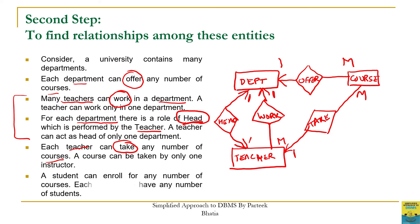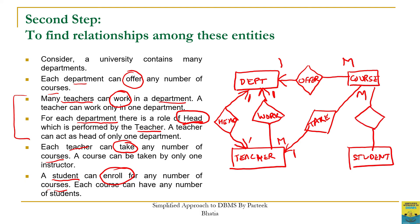The final requirement: 'A student can enroll for any number of courses.' This introduces a new entity set, student. Student has a link with course through the verb 'enroll', so we create a relationship named 'enroll'. For the type: a student can enroll for any number of courses, and each course can have any number of students — so the relationship between student and course is many-to-many.